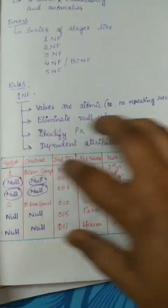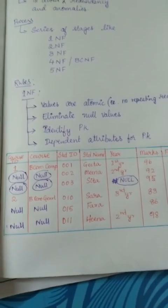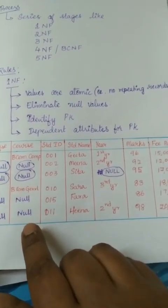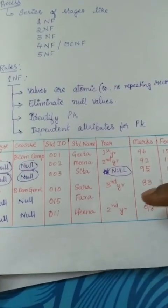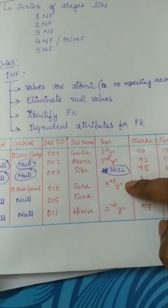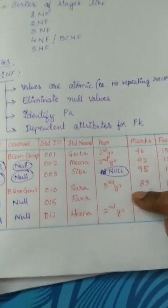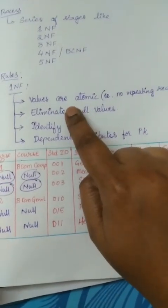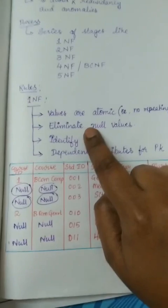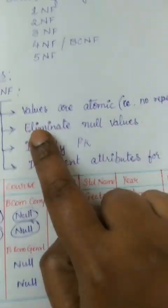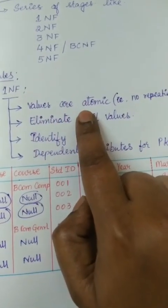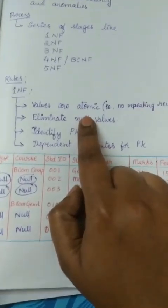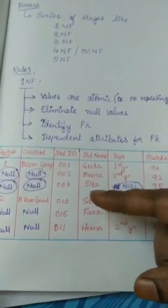There are certain mistakes — this null should not be there. Sometimes we are repeating certain kinds of information, and there is a null here too. All these things should be taken care of. What are the rules? The first thing is values are atomic — they should not be repeated. Repeating values should be removed.